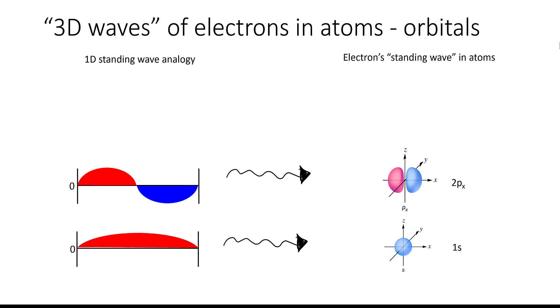The second one with one node is similar to the orbitals from the second shell, for instance like this 2px orbital. And the third one is similar to the orbitals from the third shell, for instance like this 3dxz orbital.